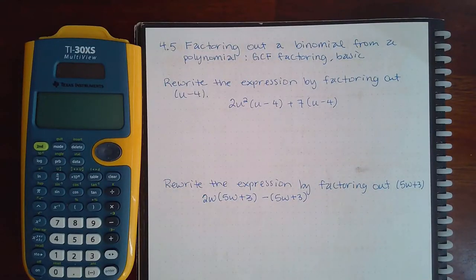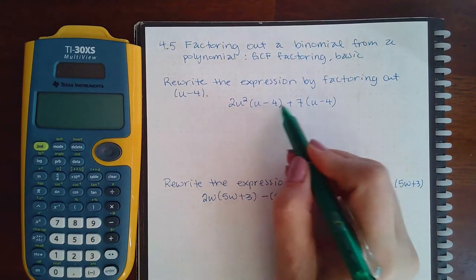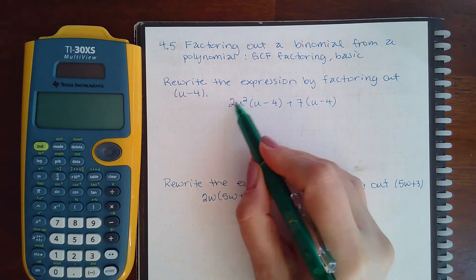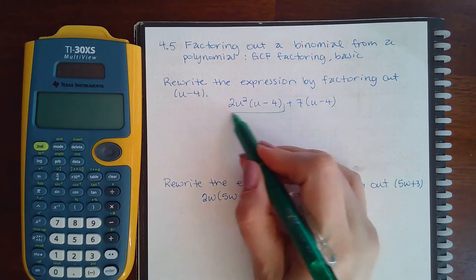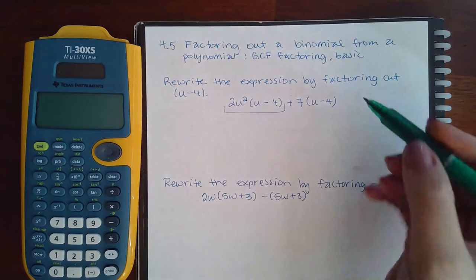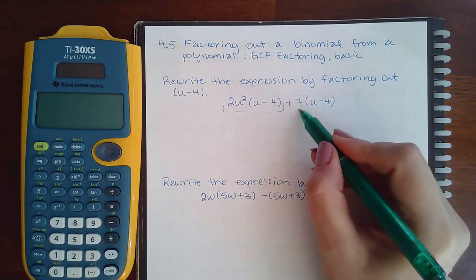Here we have 4.5, factoring out a binomial from a polynomial - GCF factoring basic. Notice that this term, this is the big plus sign, this is in parentheses, it's being multiplied by that, which means this itself is a factor of this entire term. And again, these parentheses mean that this whole thing is being multiplied by a 7.